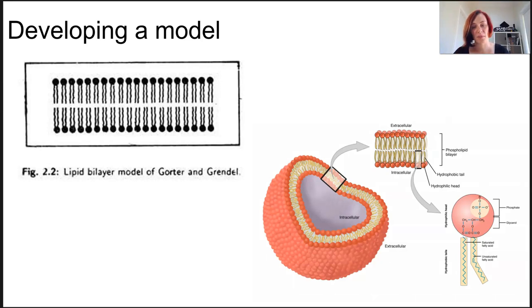When they compared the total surface area of the red blood cell with the known size of phospholipid, they counted twice as many phospholipids than they thought they would get. So they deduced that there must be a double layer of phospholipids and drew it up as such.